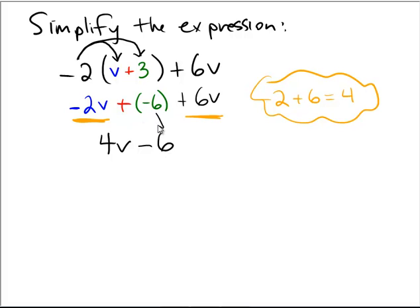So that keeps this part right there. And then the two underlined orange parts become the 4v. This is considered to be fully simplified because the terms are unlike. One has a v and one is just simply an integer.